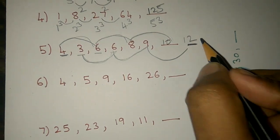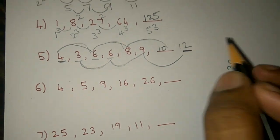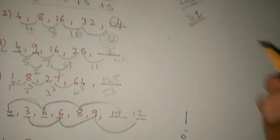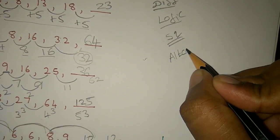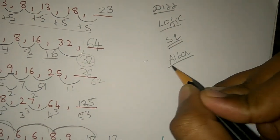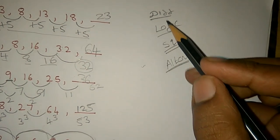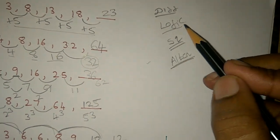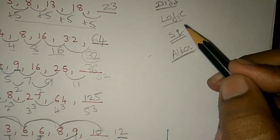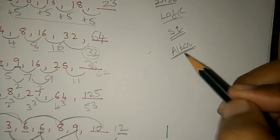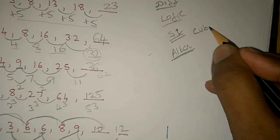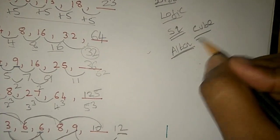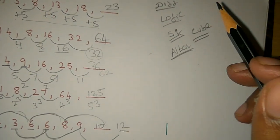The types of logic to check are: constant difference, square, alternate, and cube. Check these in this video. Let's also check through the handwriting examples.